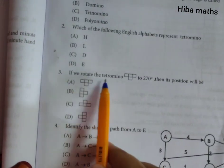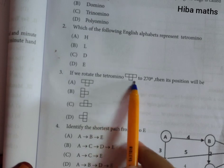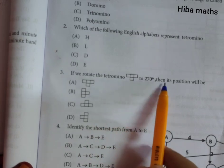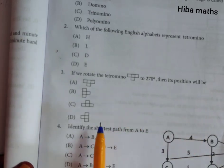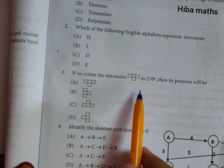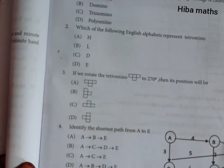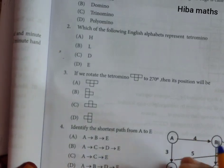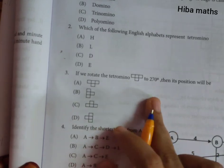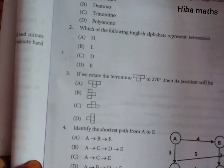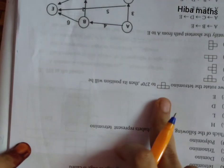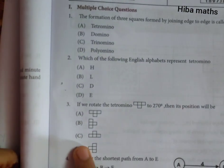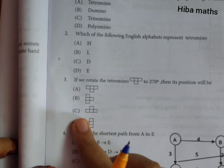Third question, if we rotate tetromino 270 degrees, then its position will be what? 270 degrees, how do we get it? First 90, 180, and 270. So that is the one that is upside down. This one will be upside down. So the answer is C. Option C is upside down.